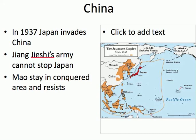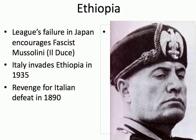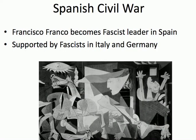The League of Nations just says 'bad Japan' — they really can't do anything about it. But this inspires Benito Mussolini, whose nickname was Il Duce, the leader. He founded a new political party called the Fascists, and they were ultra-nationalists, extreme nationalists. Italy had always felt that the League of Nations had given them the short end of the stick. So they finally conquer Ethiopia, one of the only independent African countries left. This was kind of a revenge for the Italian defeat in 1890 that Menelik II had given the Italians. That spills over into the Spanish Civil War, where Francisco Franco had become the Fascist leader of Spain, launching a revolution against the existing power. He is supported by Fascists in Italy and Germany.